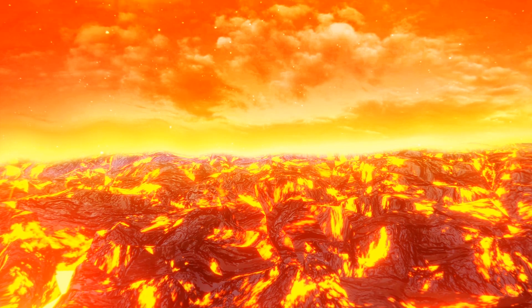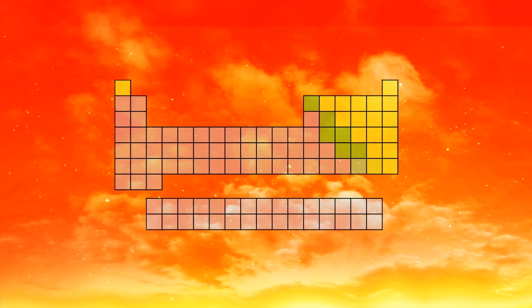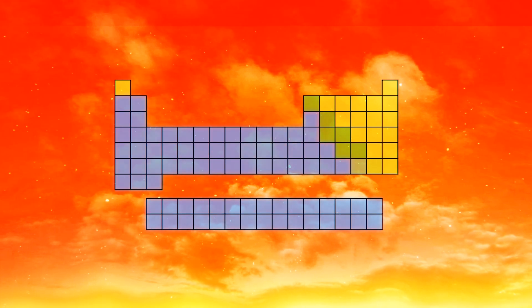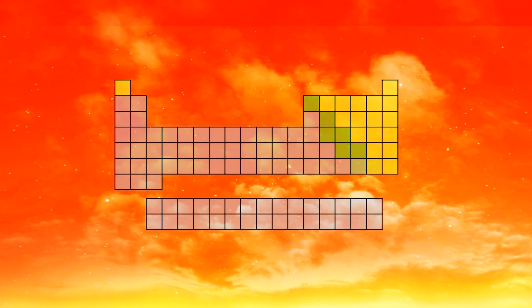The researchers speculate that lava ocean planets do not owe their brightness to molten lava or cooled glass as formerly assumed. Instead, the scientists speculate that their brilliance may have originated from metal-rich atmospheres and reflective clouds.